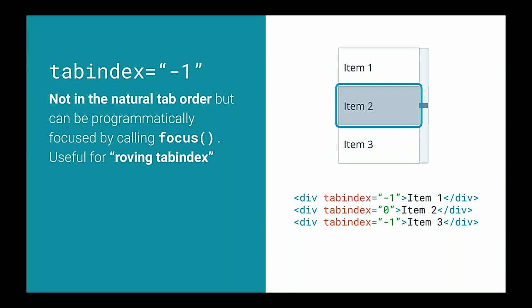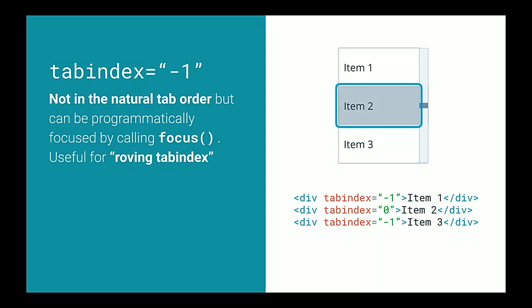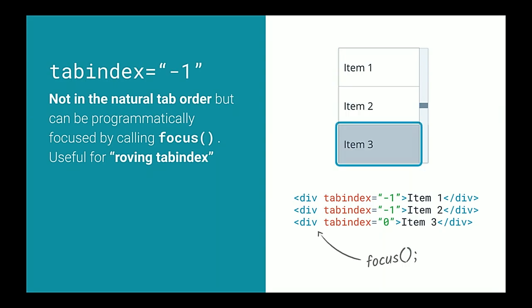Tabindex of negative 1 is useful for a technique called roving focus or roving tabindex. If I have a list with maybe 100 items, I wouldn't want the user to tab through every single one just to move past the list. So I treat the entire list as one big tab stop — they can use arrow keys to interact with it but should be able to tab out. To do this, I set tabindex to negative 1 on all elements except the currently active one. When the user focuses the item and presses the down arrow, I move my tabindex — set the next item to tabindex 0, the previous to negative 1, and call its focus method. This way the user always lands on the last item they interacted with, but can quickly tab out without going through every item.